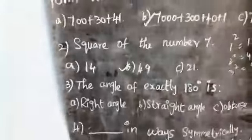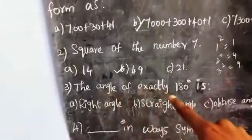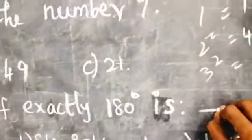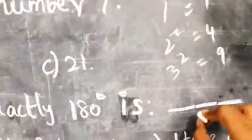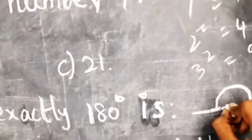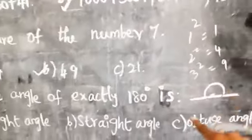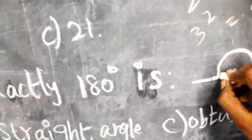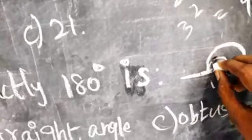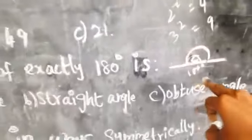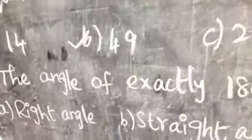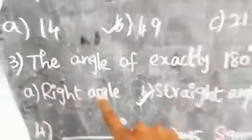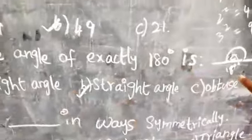The angle of exactly 180 degrees. Exactly 180 degrees means one line will be there - it comes to here. So it comes to 180 degrees. That is a straight angle. Exactly 180 degrees means it comes to a straight angle.